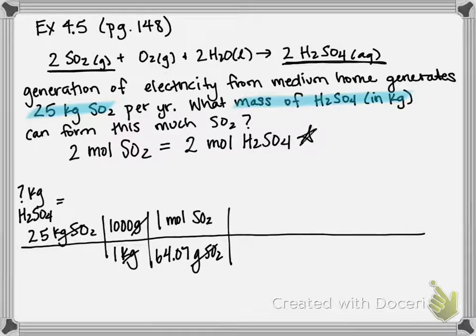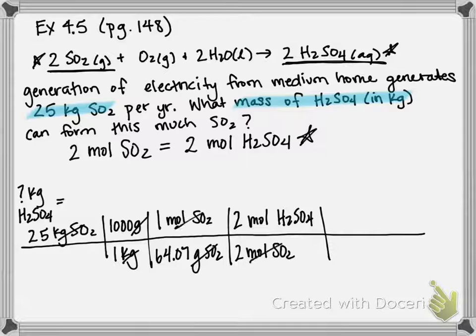Here's where we're going to use our equivalency. So what I'm trying to cancel goes on the bottom, 2 moles of SO2, and that's from the balanced chemical reaction up here. On top goes what I'm trying to get to, which is sulfuric acid, so it's 2 moles H2SO4. That 2 also came from the balanced equation. So now moles of SO2 cancel.